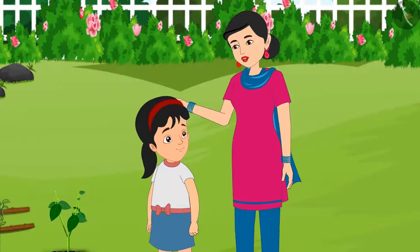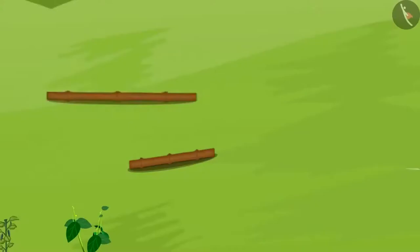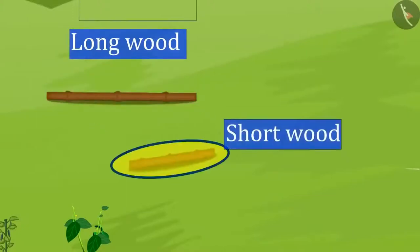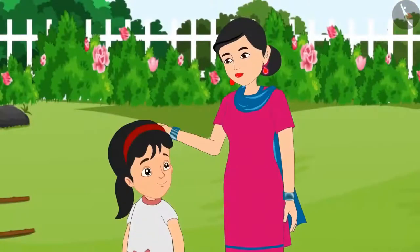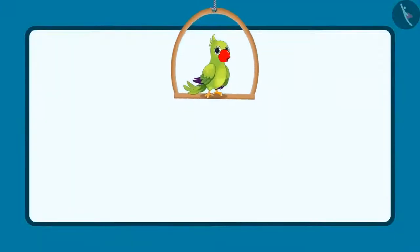Now look around and give me another example of a long object and a short object. Can you do that? Mummy, please look at these two sticks. Out of these, this stick is long and this stick is short. Right? Yes, Pinky, very good. Now let's go home.